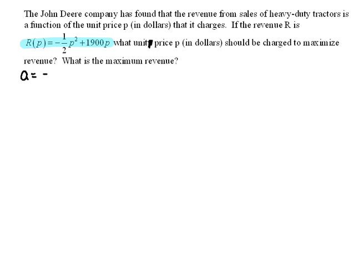A in this case is negative 1 half, it's what's in front of the squared term. B is 1900, this is what's in front of the plain variable. And we don't have a C value out here, so our C value is zero.